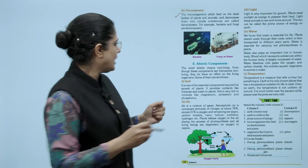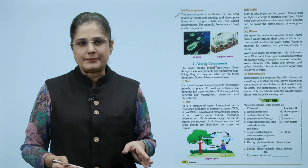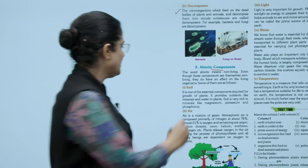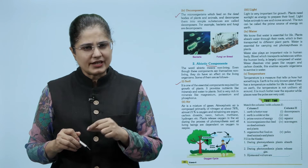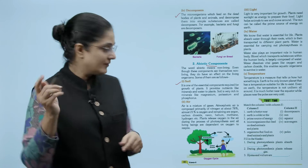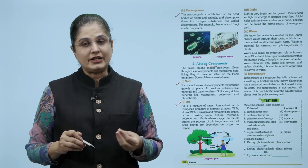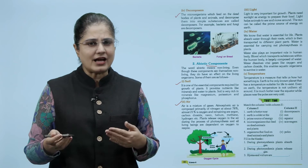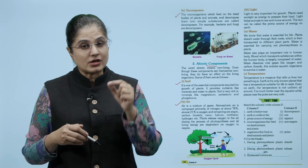Now we come to the abiotic components. The word abiotic means non-living. Even though these components are themselves non-living, they have an effect on the living organisms. Soil is one of the essential components required for growth of plants - it provides nutrients like minerals and water to plants, and is rich in minerals like magnesium, potassium, and phosphorus. Air is a mixture of gases; atmospheric air is composed primarily of 78% nitrogen, 21% oxygen, and remaining gases like argon, carbon dioxide, neon, helium, methane, and hydrogen.